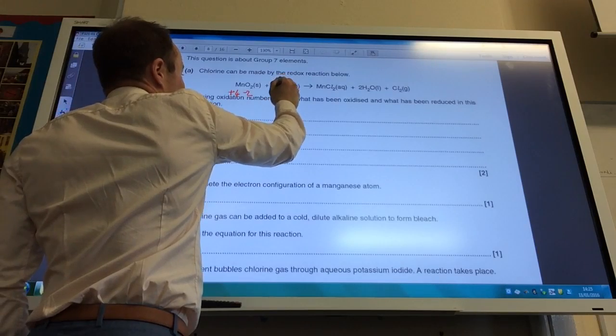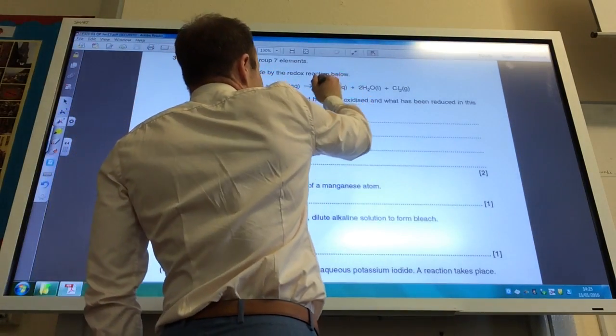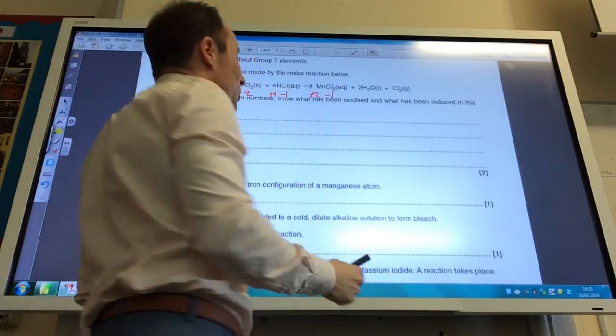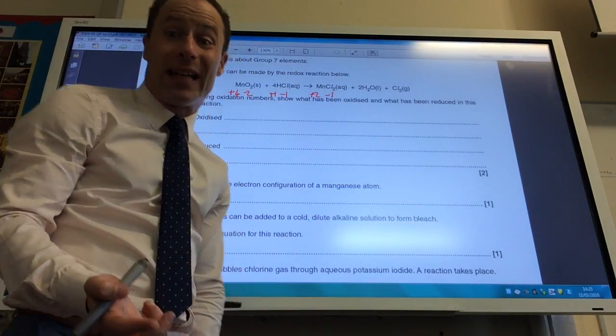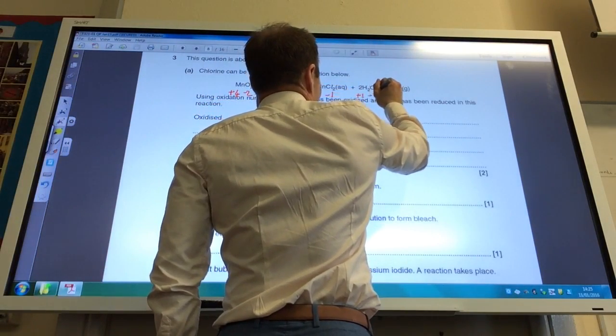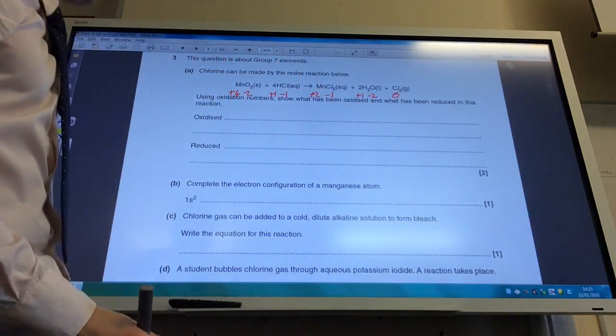Hydrogen is going to be +1. Chlorine, -1. Manganese here is actually going to be +2, because chloride is -1. I've got 2 of them, that adds up to -2. In water, hydrogen is +1, oxygen is -2, and chlorine as the element is 0.